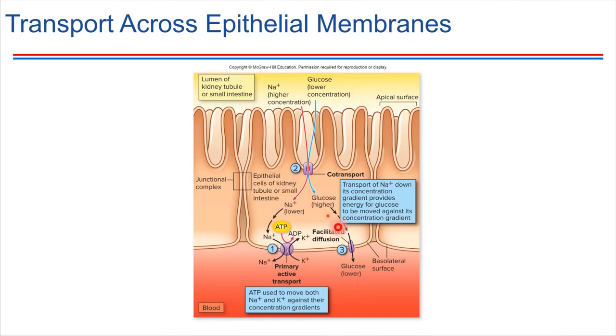So three different types of transport all have to be working together in order for glucose to be brought into the bloodstream during digestion.